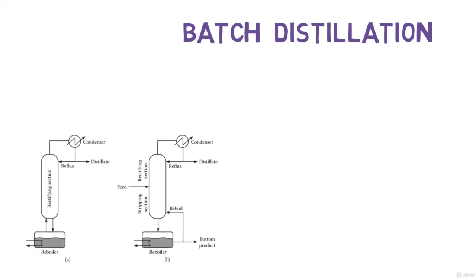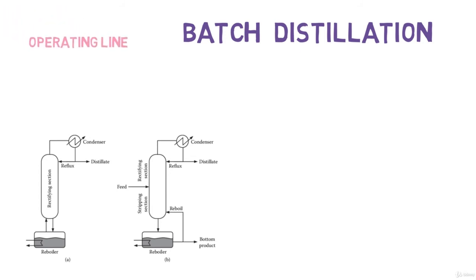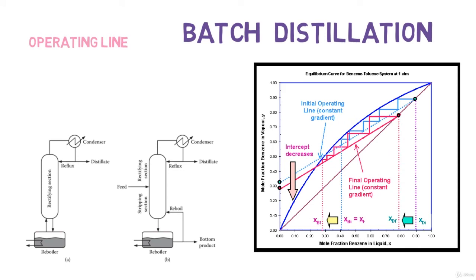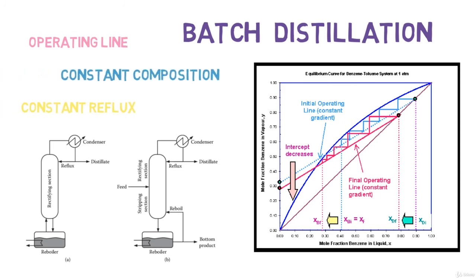One of our last sections will be batch distillation, which is pretty similar to continuous distillation in that we're going to be using an operating line. We're going to analyze constant composition versus constant reflux.